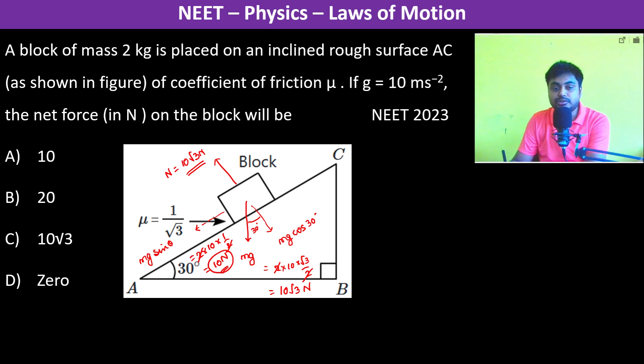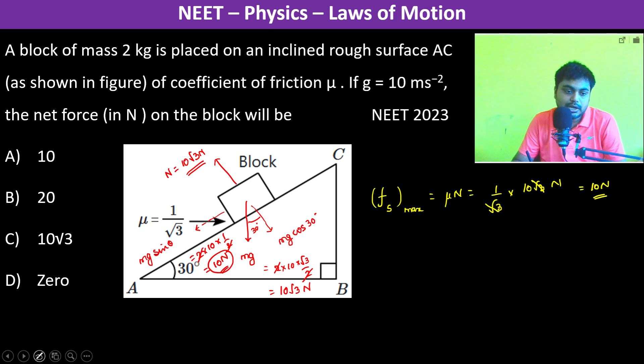Now what is the maximum friction? So frictional force maximum is equal to mu into n which is equal to 1 by root 3 into n is 10 root 3 Newtons, so therefore 10 Newtons.